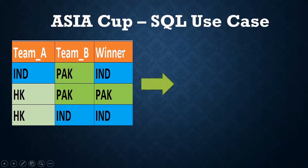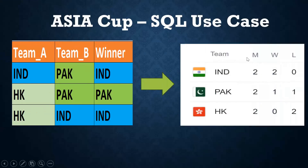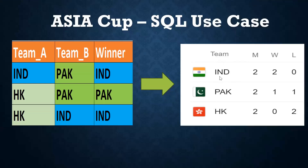My requirement is to get output like this: list of teams, number of matches played, number of wins, and number of losses. For example, India played two matches, Hong Kong played two matches, Pakistan played two matches.